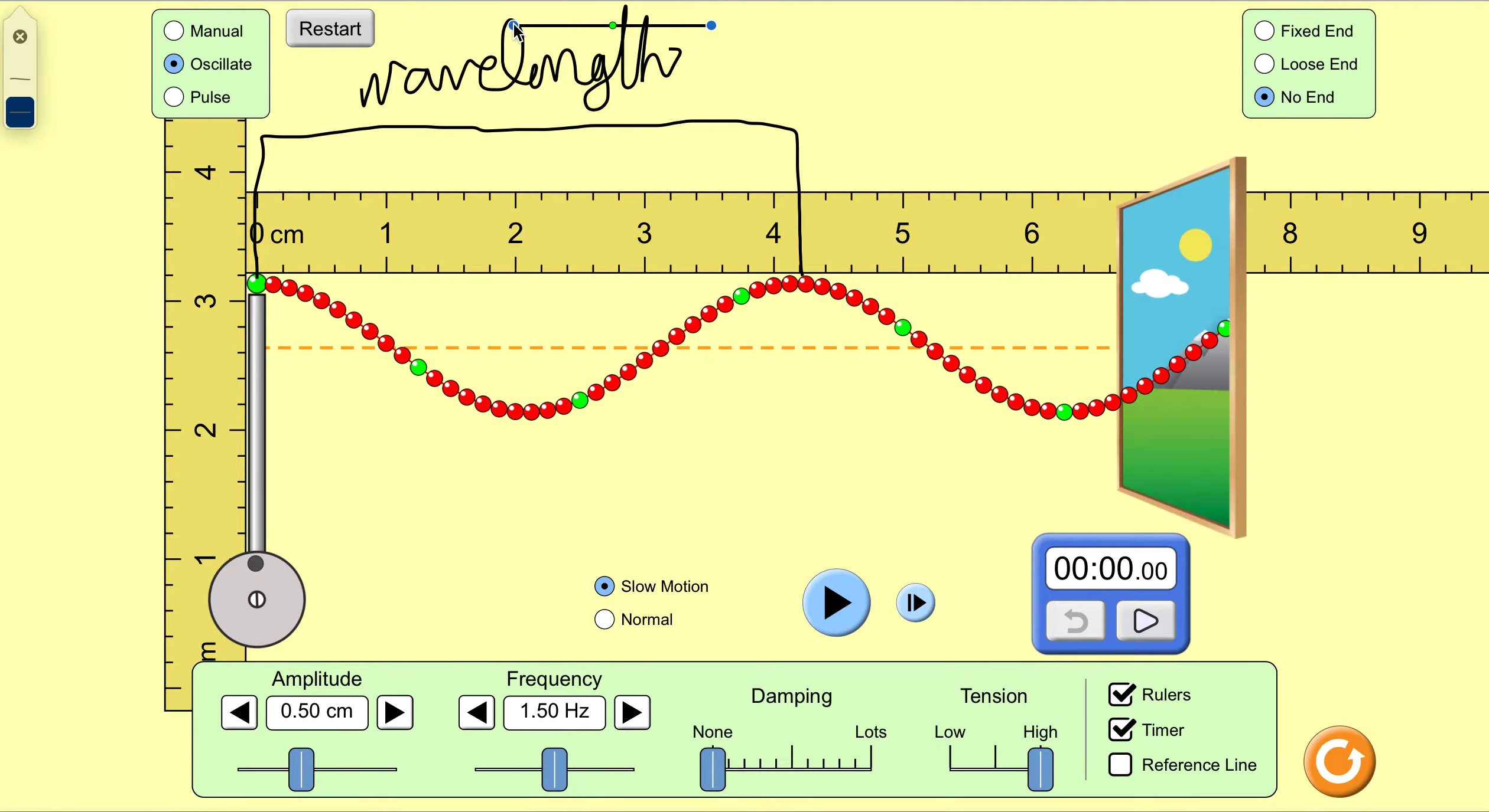Wavelength. We seem to have a wavelength of about 4.2 centimeters.